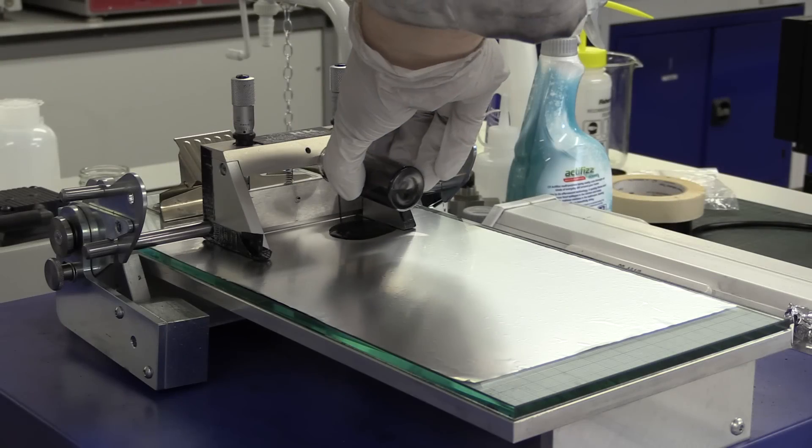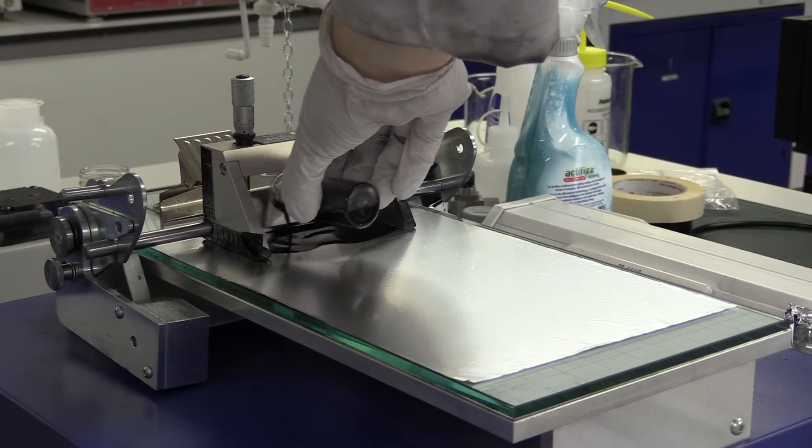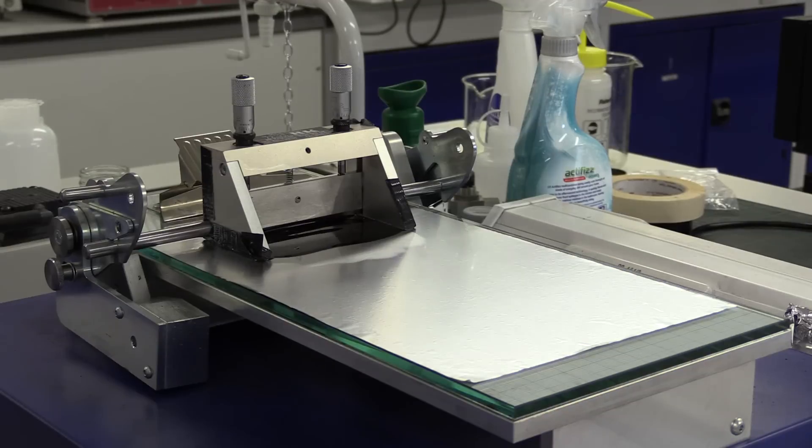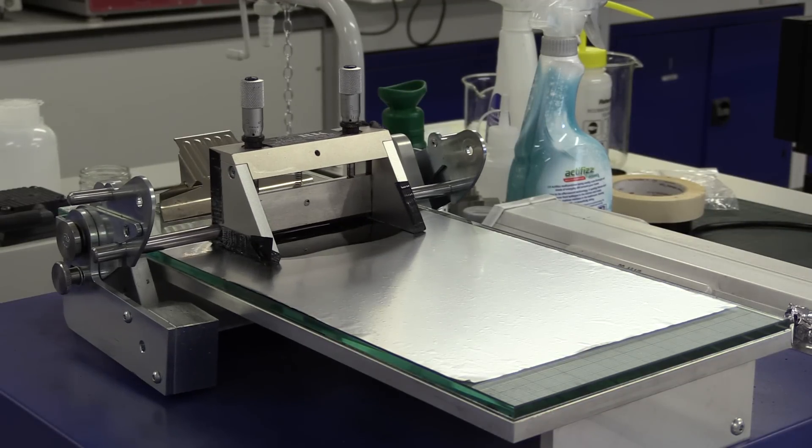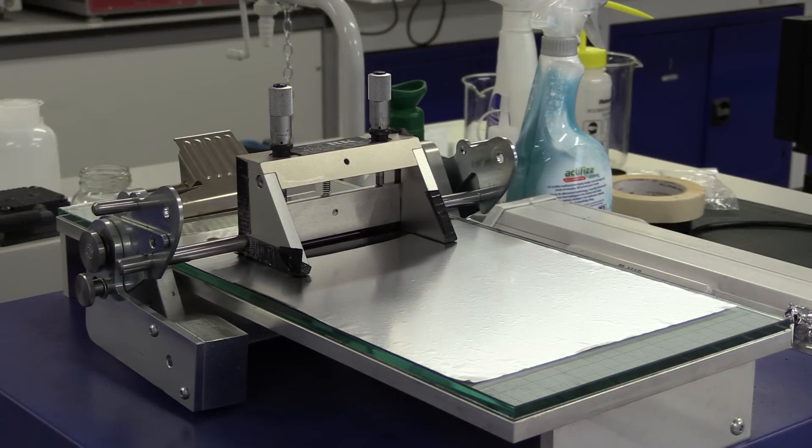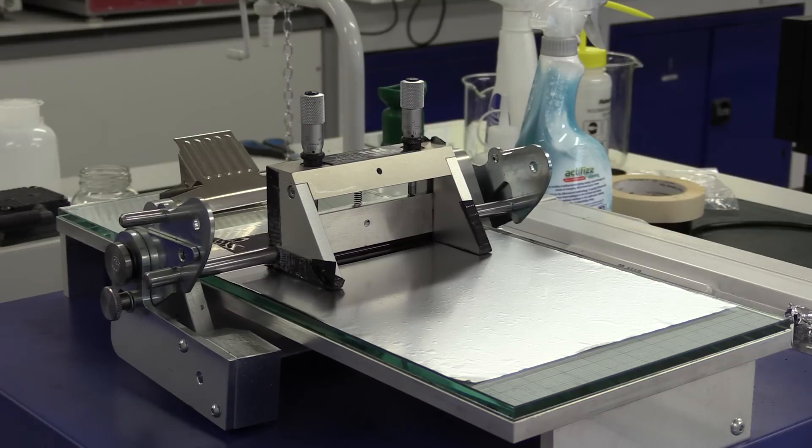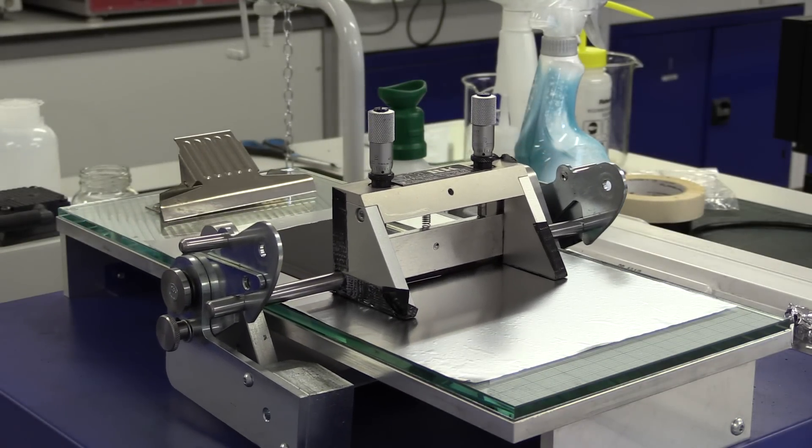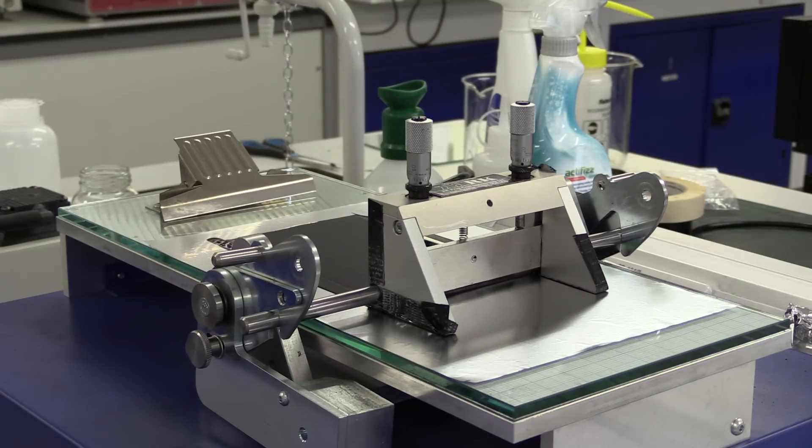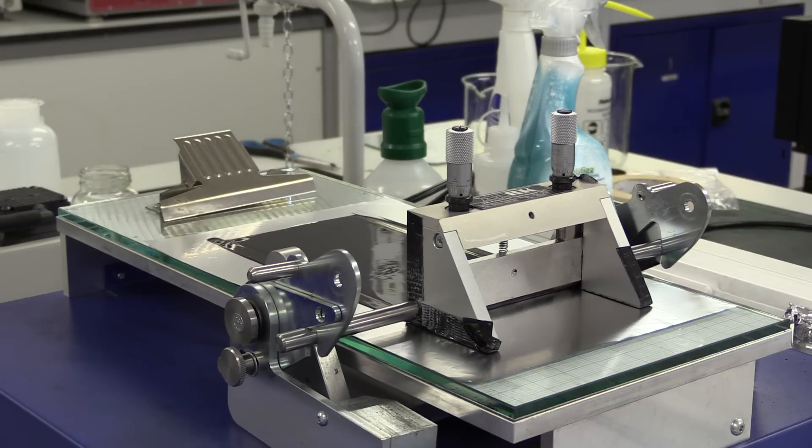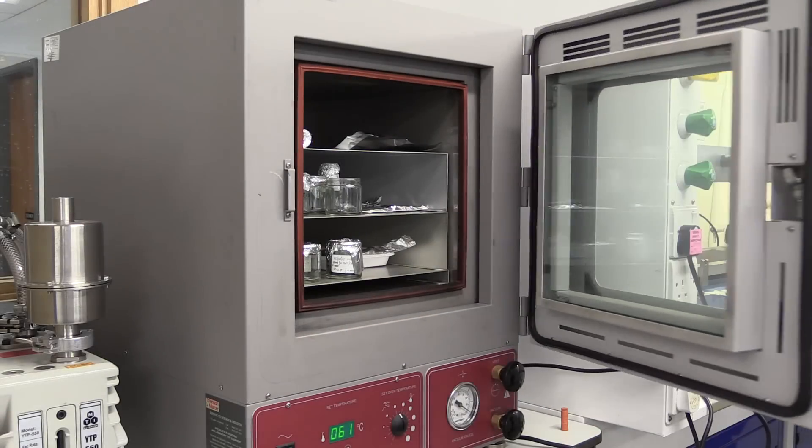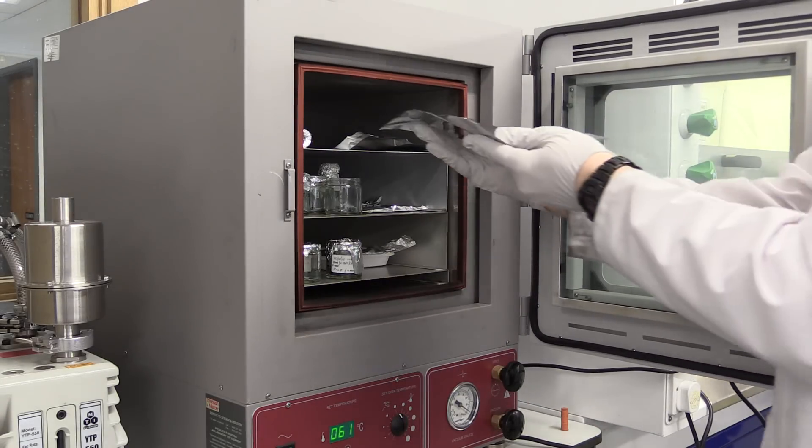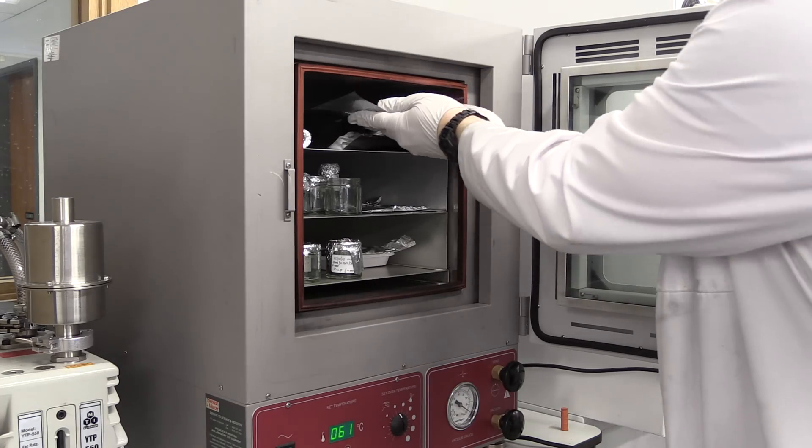After mixing, we draw the slurry onto an aluminium foil substrate using a doctor blade. This is generally set between 100 and 200 micrometres and the process results in an electrode film of uniform thickness. Different metal substrates are available and different metals result in different energy and power densities. We then dry the drawdown in a vacuum oven and slice the sheets into smaller pieces so they are easier to punch.